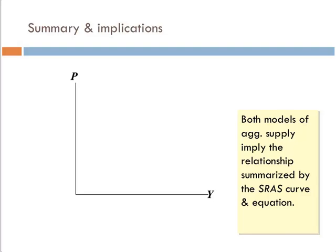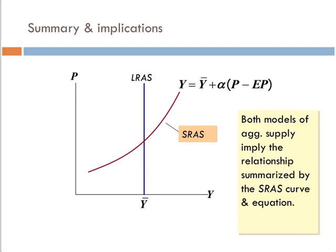Both models of aggregate supply imply the relationship summarized by the short-run aggregate supply curve and equations — both a long-run and a short-run aggregate supply curve. First, it's upward sloping. Second, output is a function of prices, and as prices go up, we produce more in the short run.